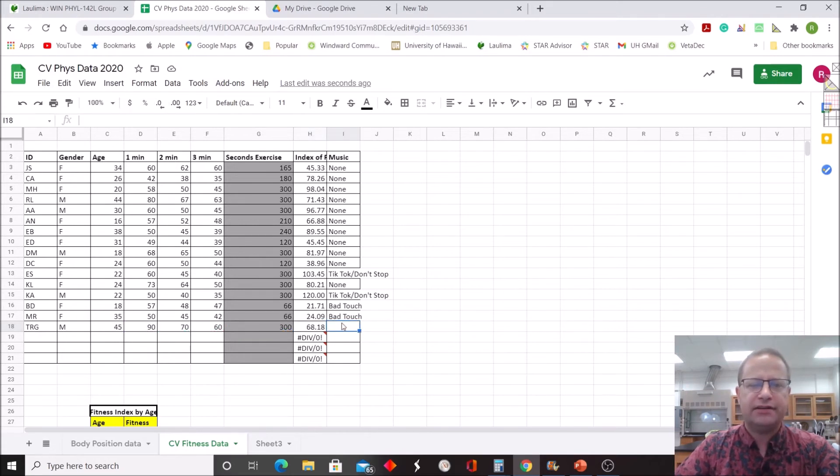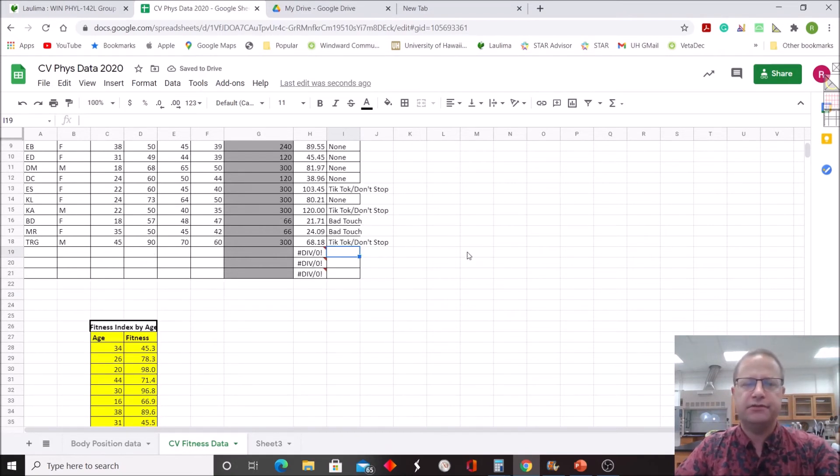And you can see it automatically calculates that fitness index using this equation up here for the Harvard Step Test. Lastly, I'm going to type in here what song I used, and that was TikTok, just so people will know how to write this up in their methods if they use this as a lab report.